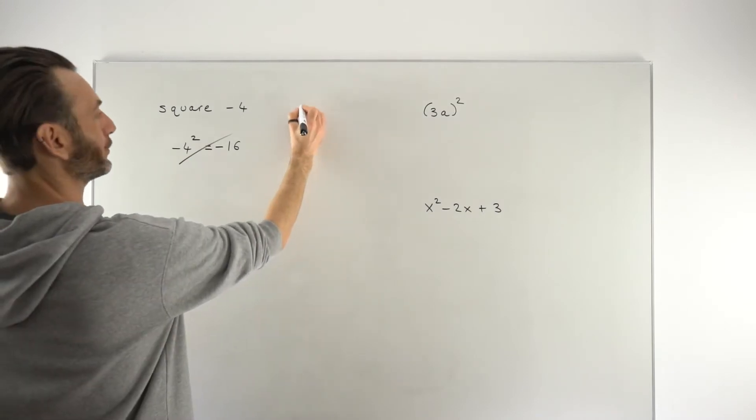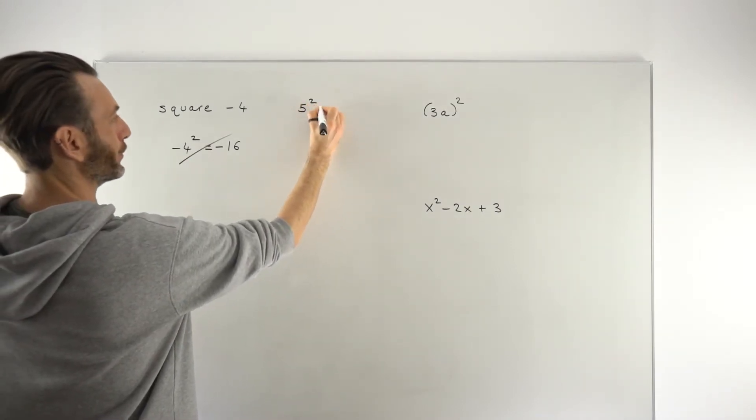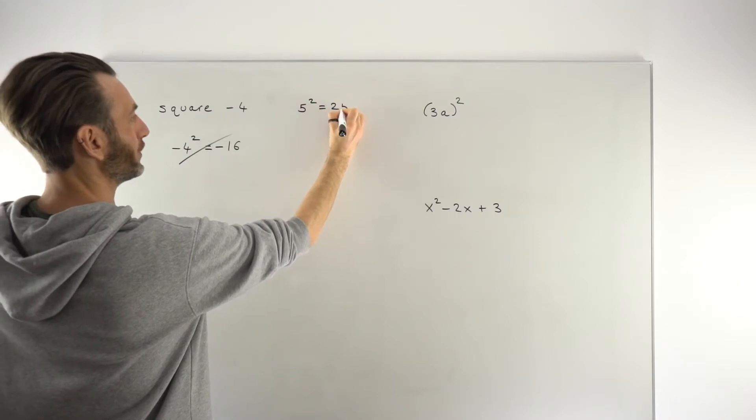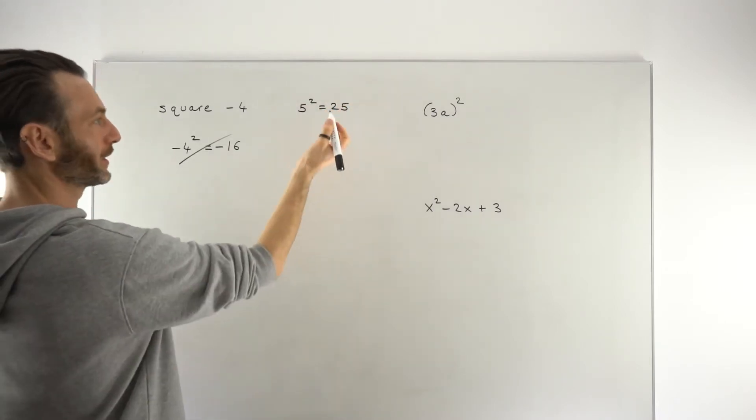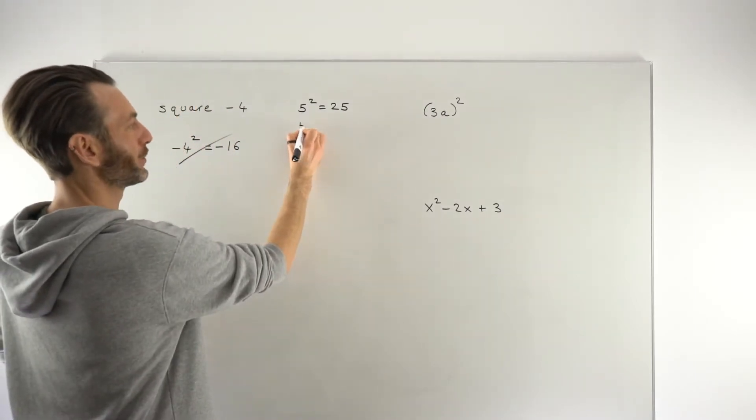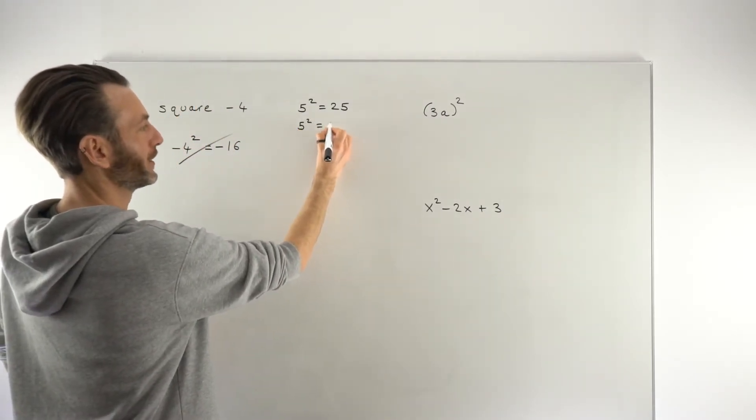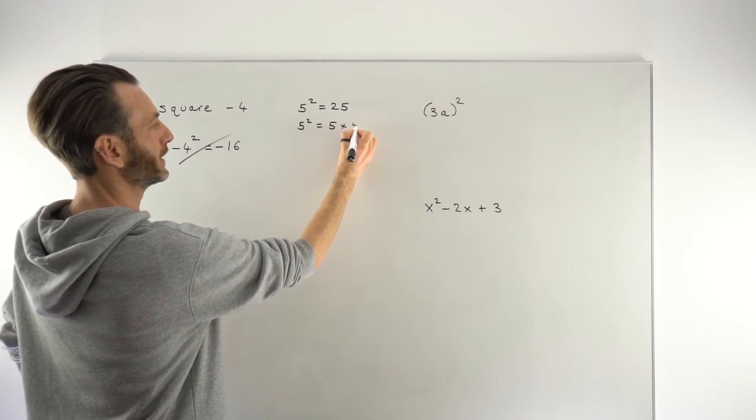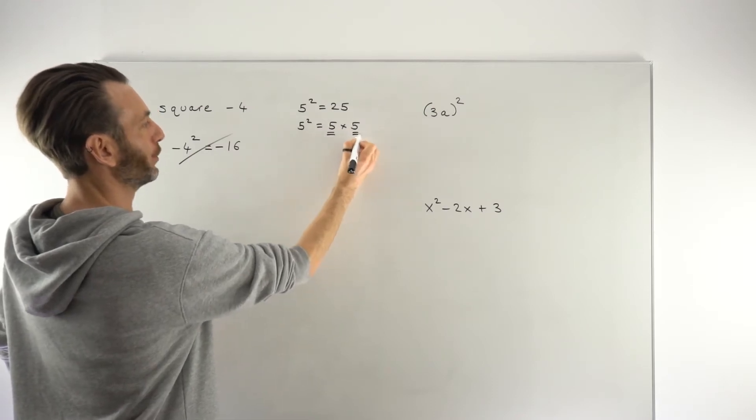So if, for example, we write 5 squared equals 25, we might just know that 5 squared is 25, but that's because in our brain we've already processed what 5 squared means, which is 5 times 5. So we've got an intermediate line of work in here where the thing is being multiplied to itself.